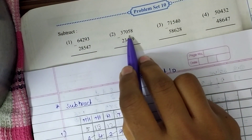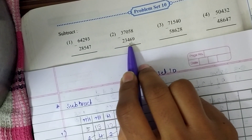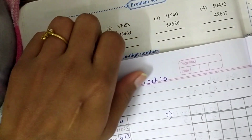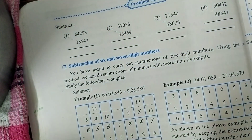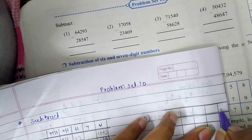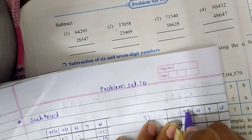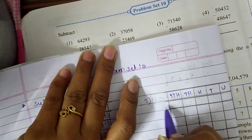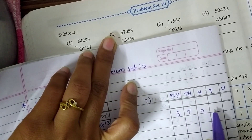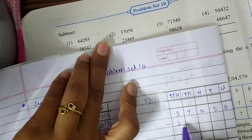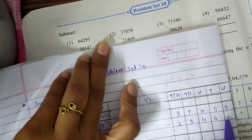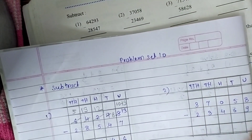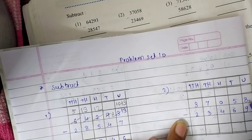Now turn to the second question. It's 37,058 minus 23,469. Let's start to write the places first — you need tens, hundreds, thousands, and ten-thousands. So the number given here is 37,058 minus 23,469. Look here — we can't subtract a bigger number from a smaller number.